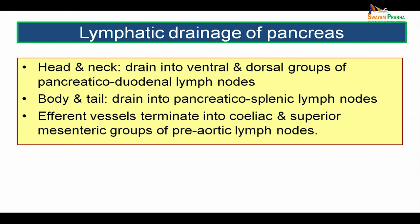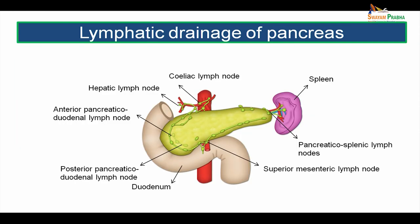The lymphatic drainage of the pancreas: the head and neck drain into ventral and dorsal groups of pancreaticoduodenal lymph nodes. The body and tail drain into pancreatic splenic lymph nodes. Efferent vessels from all these terminate into the celiac and superior mesenteric groups of pre-aortic lymph nodes.